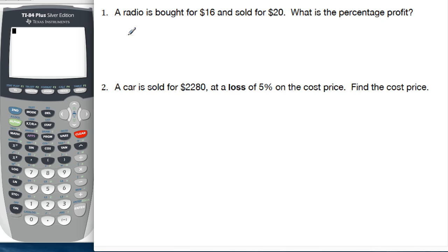So first example, a radio is bought for $16 and sold for $20. What is the percentage profit? And to find the percent profit, we always take the profit and divide it by the original. What did we start with? We started with $16. And that reduces to one quarter. This is a nice one for a non-calculator because one quarter we know is 25%.